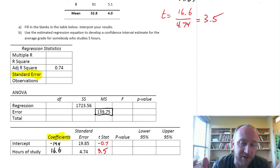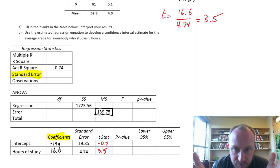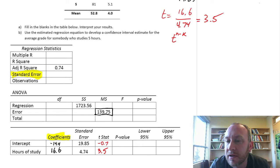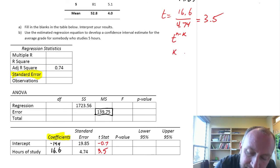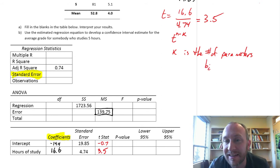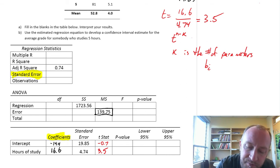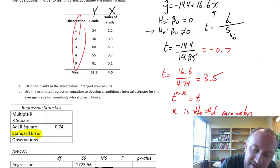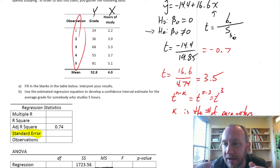What will the t-distribution look like? These test statistics come from a t-distribution with n minus k degrees of freedom, where k is the number of parameter estimates — the number of coefficients we're estimating. In this exercise we calculated a y-intercept and a slope, so k equals 2. With n equals 5 observations, this gives us 5 minus 2 equals 3 degrees of freedom.